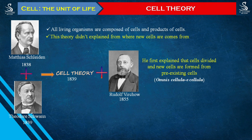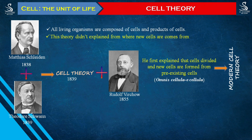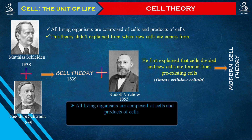Finally, Virchow gave the complete shape to the cell theory that we now learn as the modern cell theory. According to the modern cell theory: all living organisms are composed of cells and the products of cells — a statement given by Schleiden and Schwann — and all cells arise from pre-existing cells, added by Rudolf Virchow.